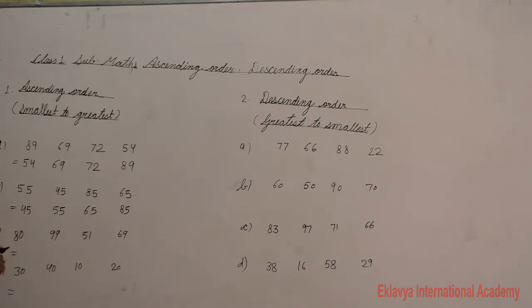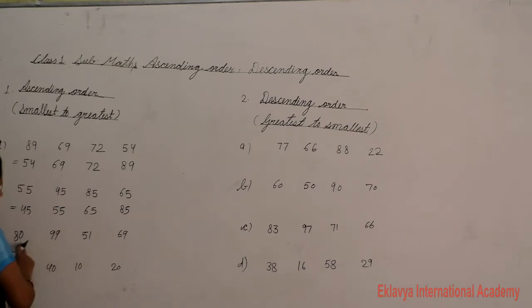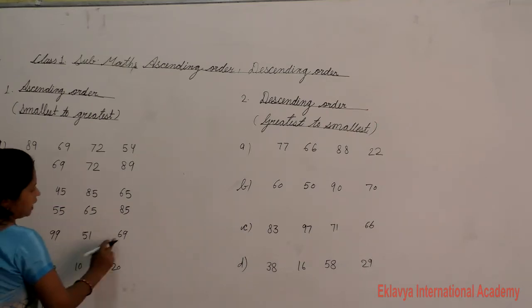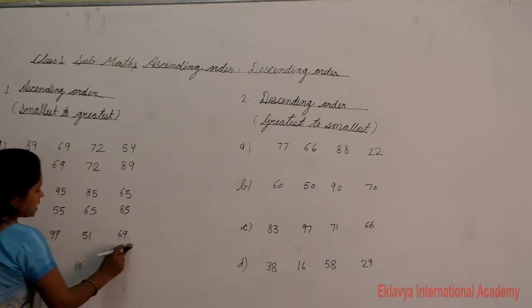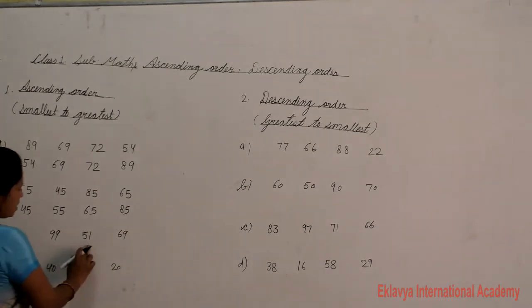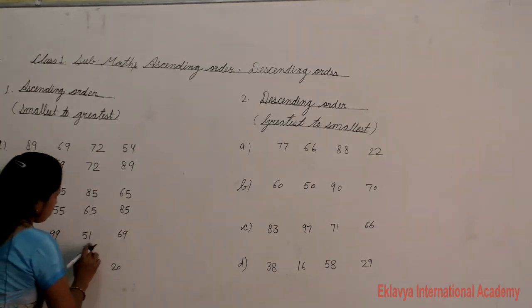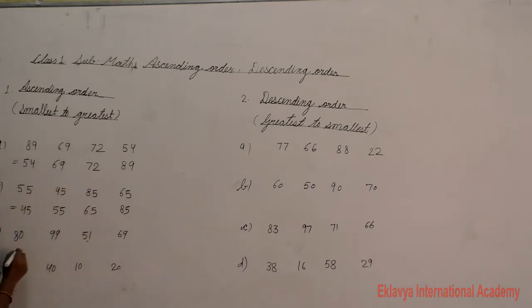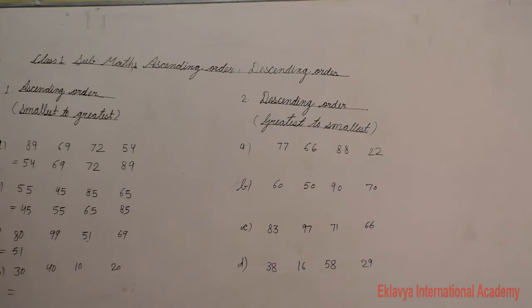Next example: 80, 99, 51, and 69. We choose the smallest number first. The smallest number is 51. So in ascending order we start with 51.